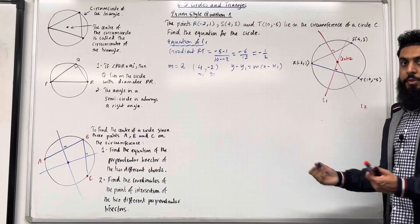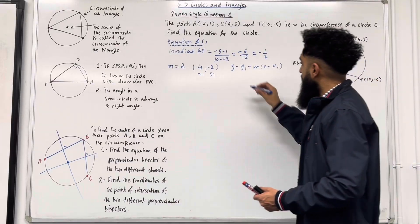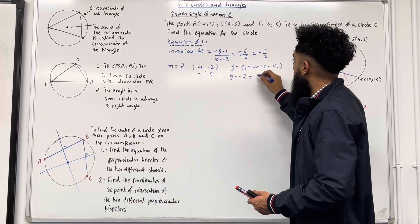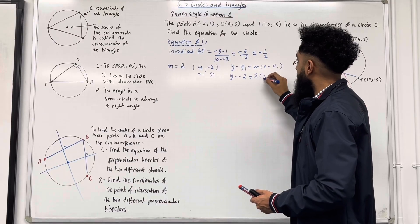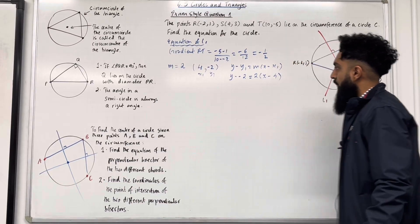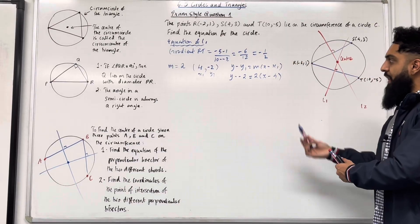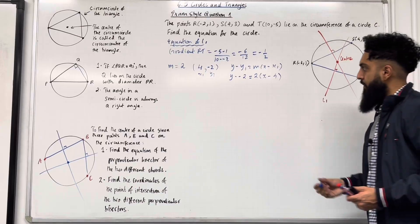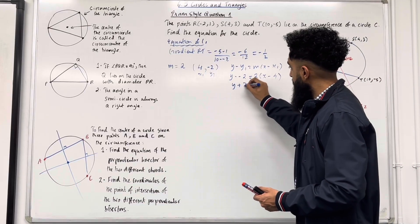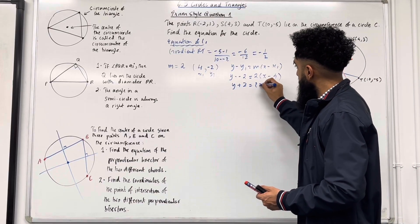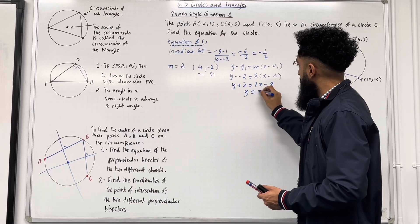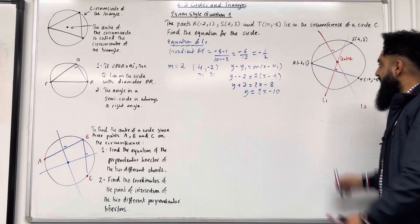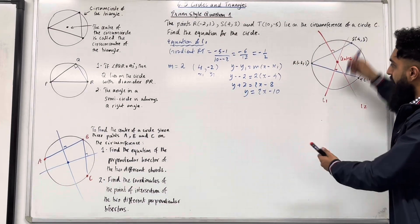Now I can use y − y₁ = m(x − x₁) to find the equation of L1. Substituting the values in: y − (−2) = 2(x − 4). Rearranging and writing in the form y = mx + c gives the equation of L1.